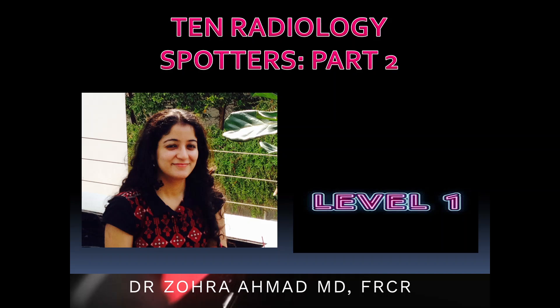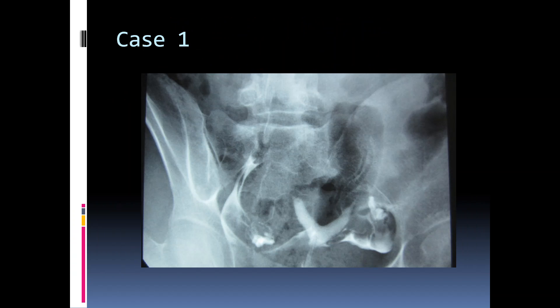I'm Dr. Zora Ahmed and I will be discussing 10 radiology spotters or antinies which will be useful for people preparing for MD, DNB, or FRCR exams. The first one is an HSG or hysterosalpingography, and here we see two widely separated uterine cavities with an intercornual angle of approximately 100 degrees, and this is a bicornuate uterus.